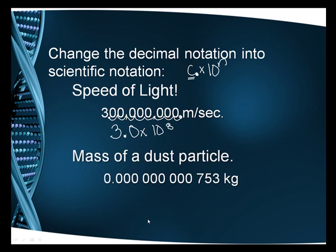So let's look at the mass of a dust particle. How would we write that in scientific notation? Now remember, we have the number and then a decimal point. So we need to write it as 7.53. But the decimal is actually right here. So we need to count how many places it's going to move.